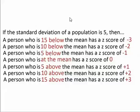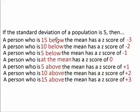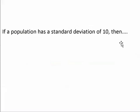If you start at the mean and you go down by 5, you go down by 5 again, and you go down by 5 one more time, then you've gone three standard deviations below the mean and you've reached this student right here who is 15 below the mean with a z-score of minus 3. Now what if the standard deviation of the class was 10 instead of 5?